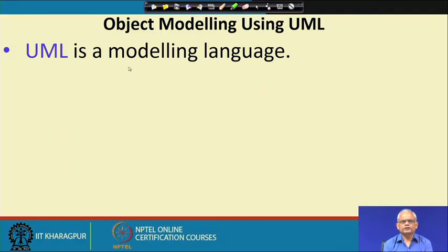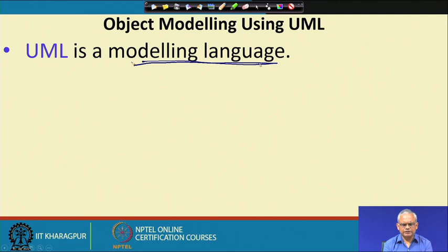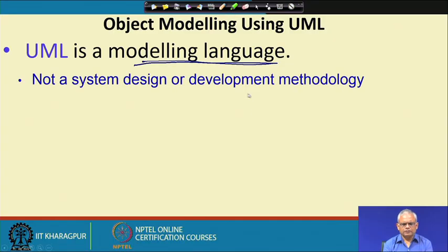UML stands for Unified Modeling Language and, as the name implies, it is a modeling language — we can say that it is a language. UML is a language using which we can document the model and the design. Let us be clear: UML is just a language. When we learn a language we can document things, but it is not a design and development methodology.